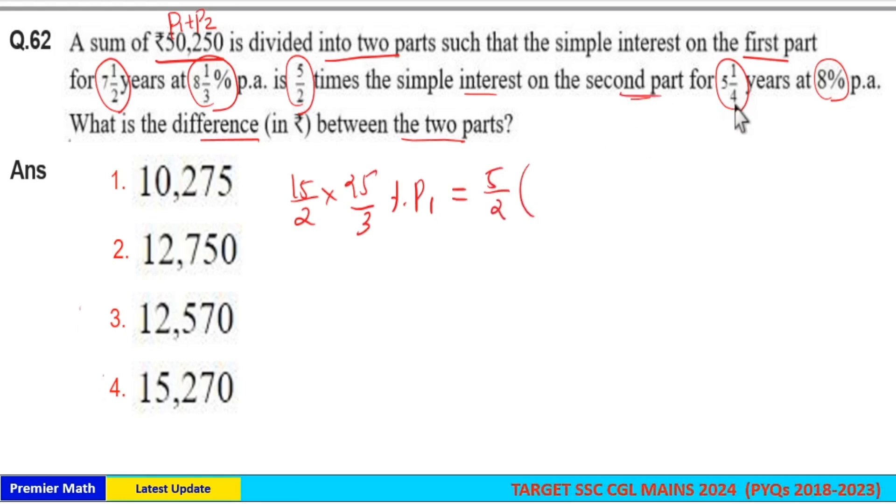the second part. Interest on the second part means for one year it is 8 percentage of the principal. Then for 21/4 years it is 21/4 into 8 percentage of the principal. Now cancel the terms: three goes